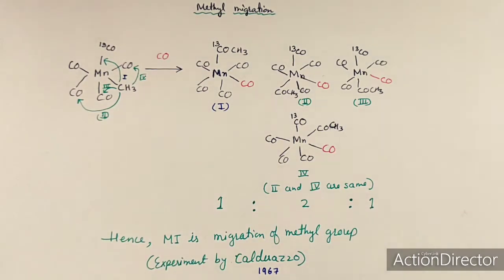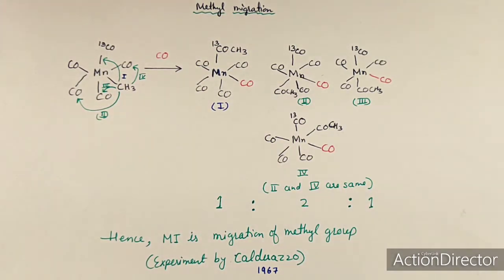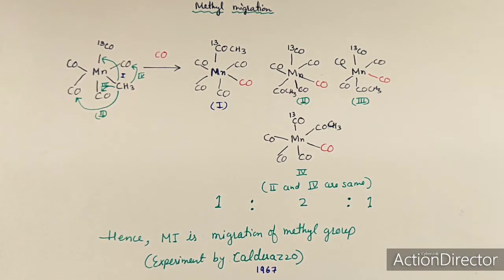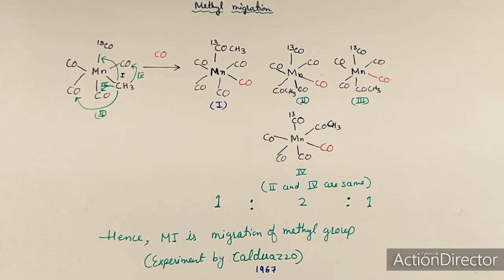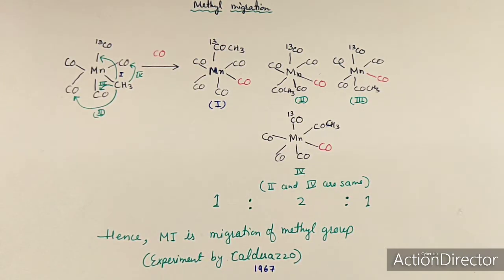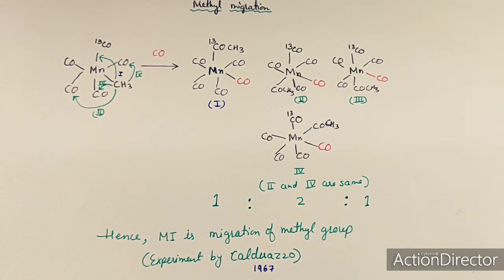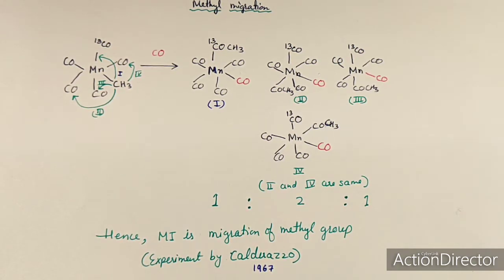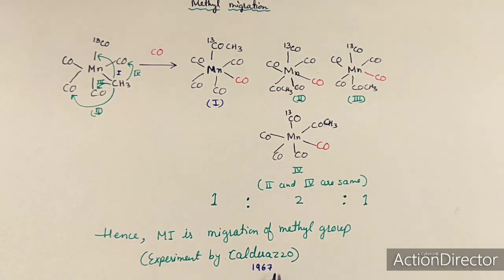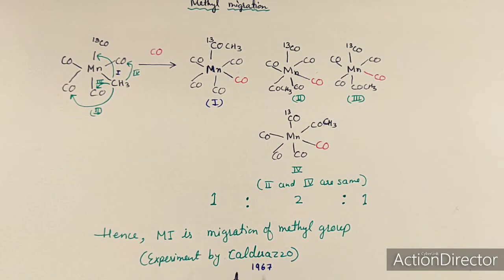In this lecture we will discuss the migratory insertion reaction mechanism — specifically whether it proceeds via methyl migration or CO insertion. In 1967, Calderazzo performed an experiment to resolve this question.